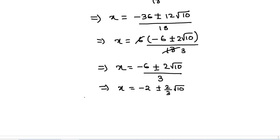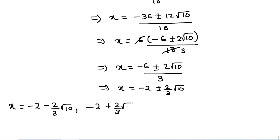So the three solutions are: x = -2 - (2/3)√10, x = -2 + (2/3)√10, and previously we got x = -2. These three are the answers to the given equation. I hope you have understood the solution. Thanks for watching. Please subscribe to my channel for more such interesting videos.